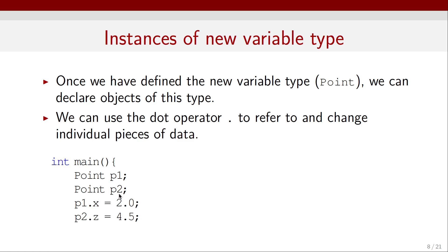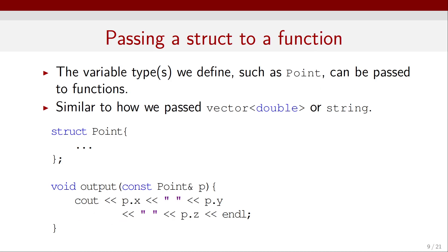Similarly, we can change, for example, the z component of the point p2 and set it equal to 4.5. Now, the variable types that we define, such as a Point, can be passed to functions as arguments.